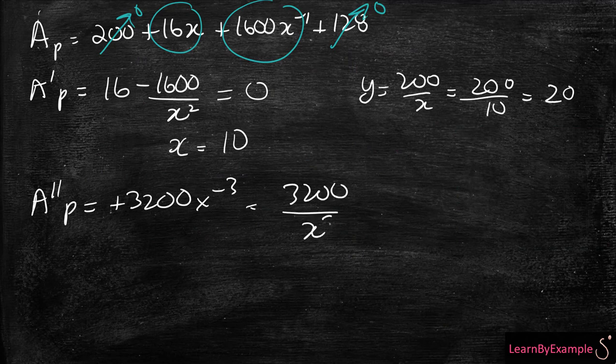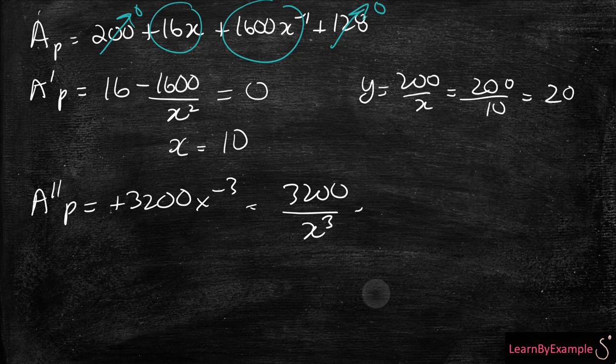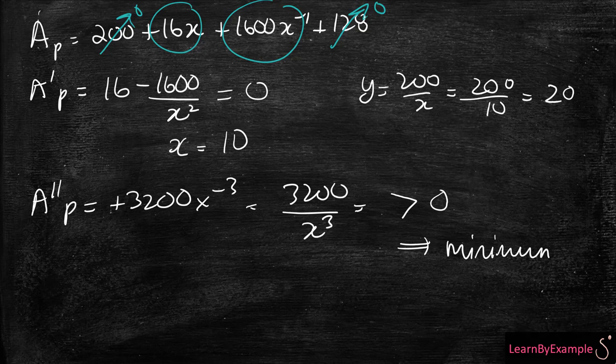So in this case, if we sub in X is equal to 10, you're going to be left with a positive number. So it's greater than 0. And when it's greater than 0, you know that it is in fact a minimum.